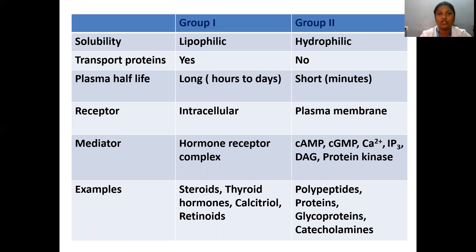Hormones can also be classified into Group 1 and Group 2, each with specific properties. Group 1 has lipophilic solubility — it is lipid soluble — and Group 2 is water soluble. Since Group 1 is lipid soluble, it needs transport proteins to reach the target cell, whereas Group 2 does not. Group 1 has a longer plasma half-life, whereas Group 2, being water soluble, has a shorter plasma half-life.